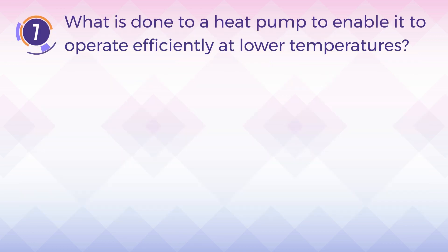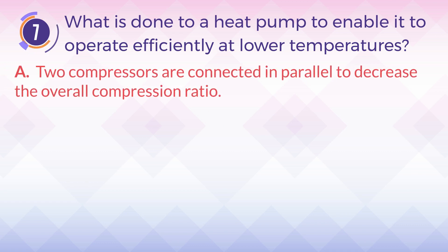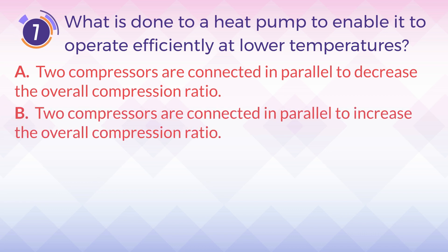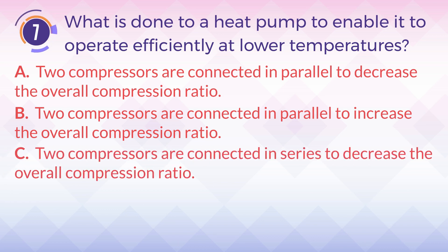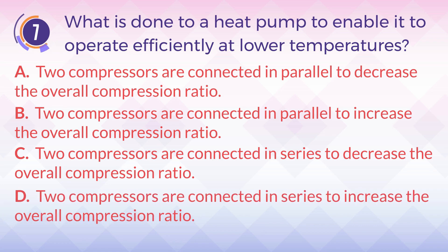Number 7. What is done to a heat pump to enable it to operate efficiently at lower temperatures? A. Two compressors are connected in parallel to decrease the overall compression ratio. B. Two compressors are connected in parallel to increase the overall compression ratio. C. Two compressors are connected in series to decrease the overall compression ratio. D. Two compressors are connected in series to increase the overall compression ratio.